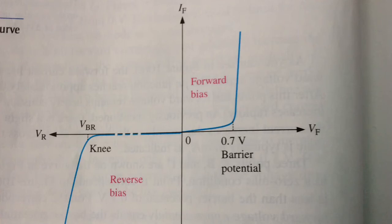With 0V across a diode, there is no reverse current. As you gradually increase the reverse bias voltage, there is a very small reverse current and the voltage across the diode increases.